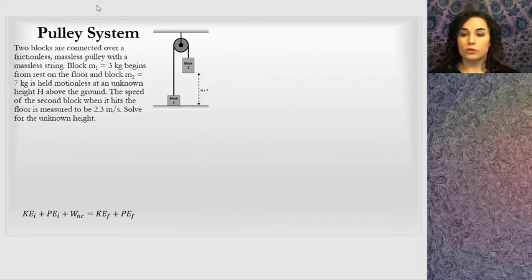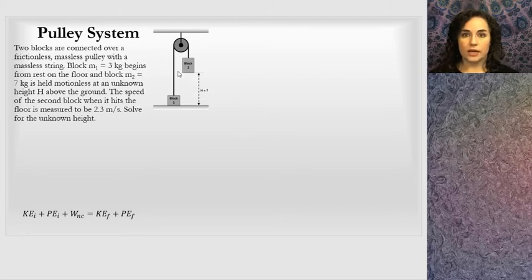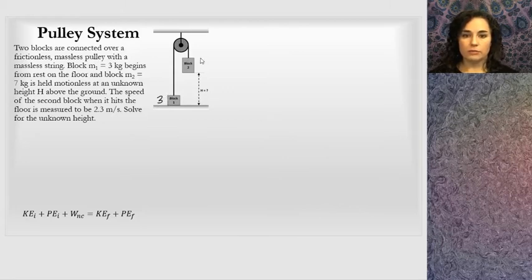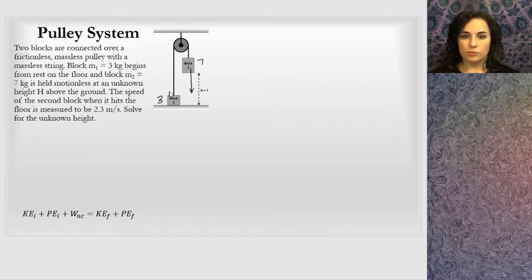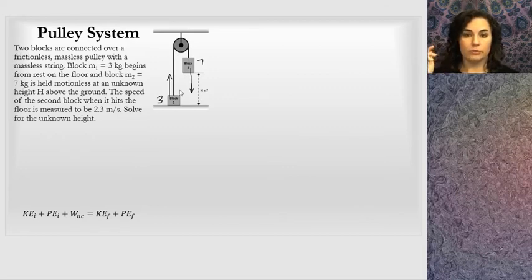Another problem I've chosen for conservation of energy is the Atwood machine, which I looked at in the conservation laws and state functions lesson. Two blocks are connected over a frictionless, massless pulley. There's a three kilogram mass and a seven kilogram mass. This system will naturally rotate because the seven kilogram block is heavier - it falls down to the floor and the three kilogram block rises up. I chose this problem because it involves a system of objects, and I want to show how you handle that with conservation of energy.